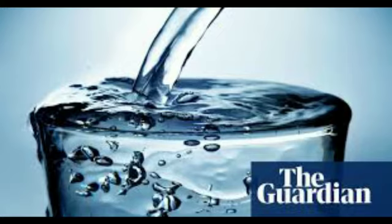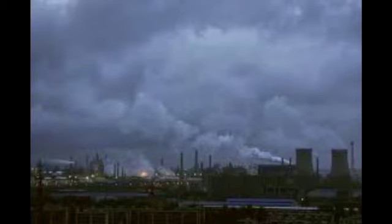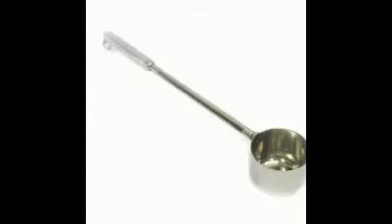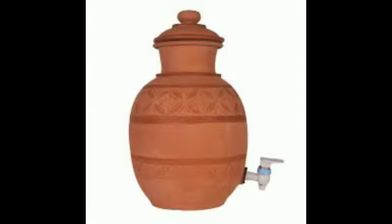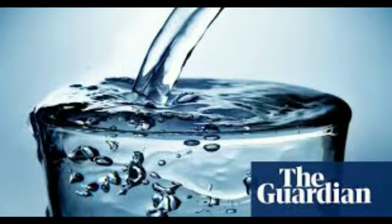For drinking water, we keep the drinking water container covered. This prevents dust and other rubbish from entering the water. If we dip our hands in the water to take it out, the dirt on our hands can enter the water. So we should use a ladle to take water and replace the lid at once. When the water in the container is finished, we wash the container well before refilling.